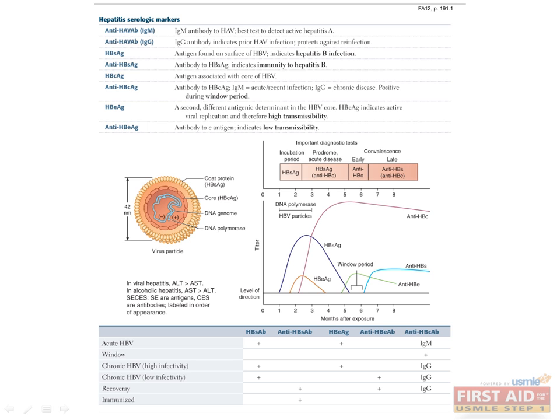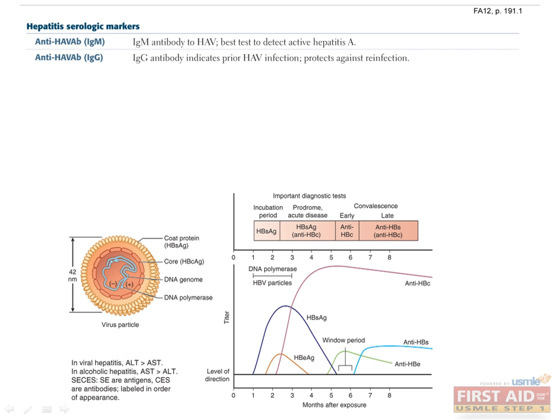Diagnosing hepatitis B involves being able to interpret serologic results that detect the presence of hepatitis B antigens or antibodies produced by the host. For hepatitis A, the presence of anti-hepatitis A virus antibody can tell us whether the patient has acute hepatitis A or was previously infected with hepatitis A.